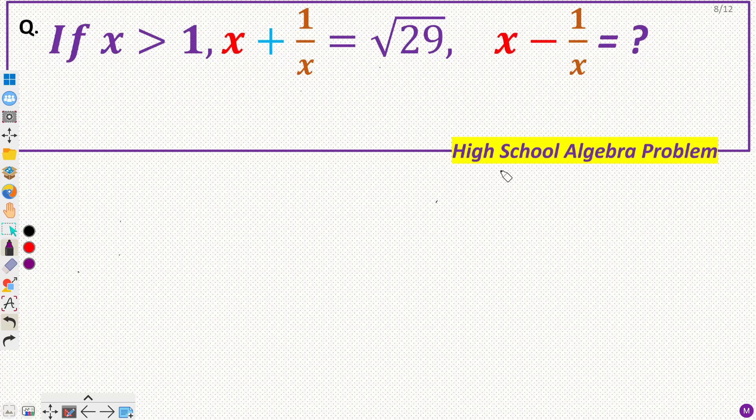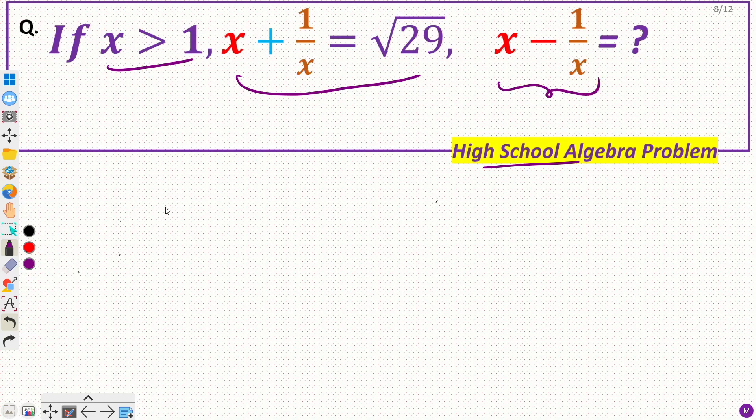Hey everyone, in this video we will discuss a high school algebra problem. The question says if x is greater than 1 and x plus 1 by x is given as root 29, what is the value of x minus 1 by x? So we have x plus 1 by x as root 29 and we want to find x minus 1 by x.